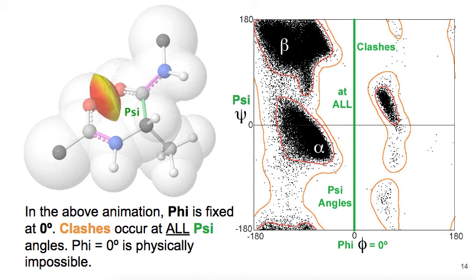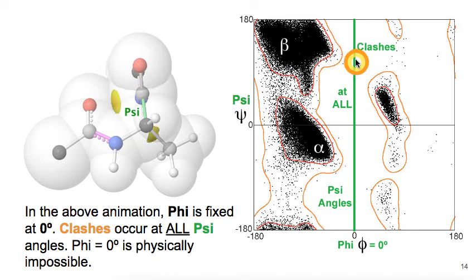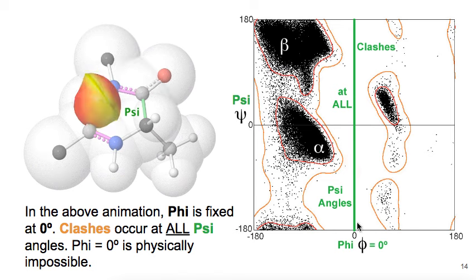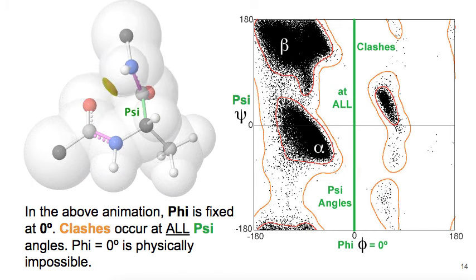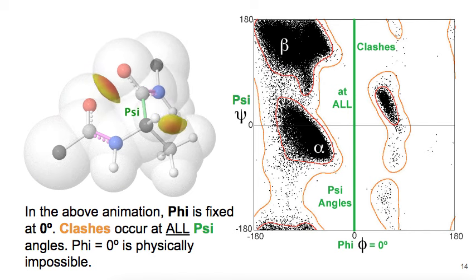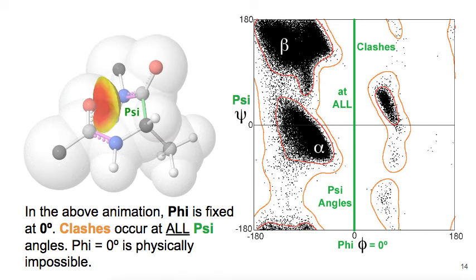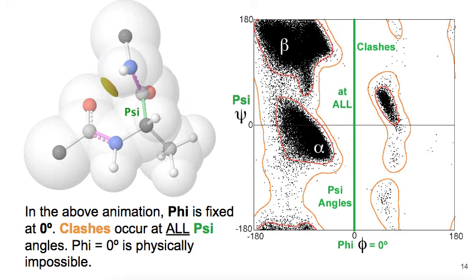In this third and final animation, I've set phi at 0 degrees, an angle that does not occur in real proteins. Indeed, as you watch psi rotate, you see that there are clashes at all psi angles. Thus, phi of 0 degrees is physically impossible.